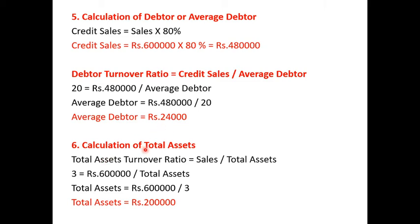Next, calculation of total assets using total asset turnover ratio. The formula is sales divided by total assets. Total asset turnover ratio is 3 times, and sales is 6,00,000. So, 3 = 6,00,000 ÷ total assets. Therefore, total assets = Rs. 2,00,000.